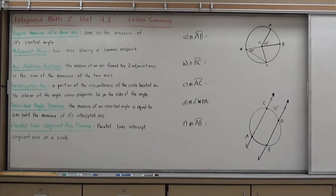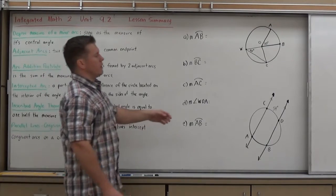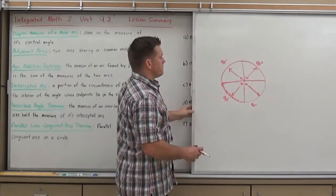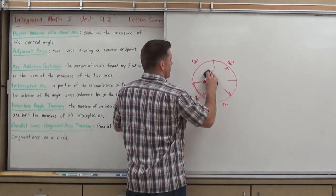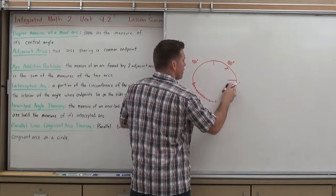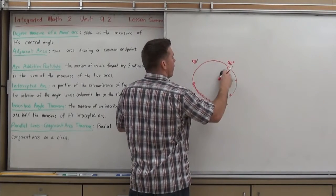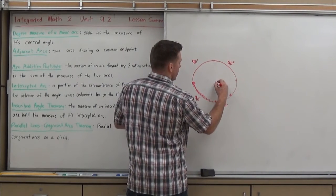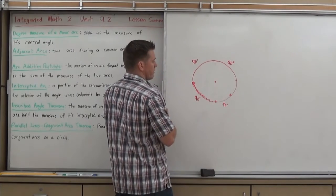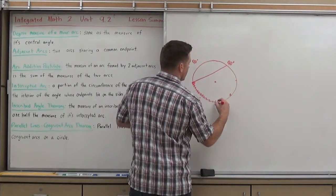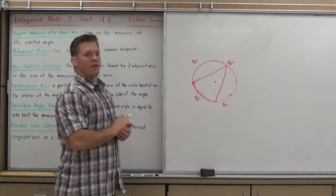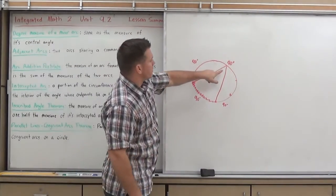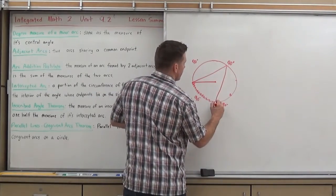The inscribed angle theorem says that the measure of an inscribed angle is equal to one half the measure of its intercepted arc. So let me explain what an inscribed angle is. So we have this same diagram. We know that these are 90, etc. Well an inscribed angle now goes from two points on the circle. And rather than going to say the vertex, it goes all the way through to the other side of the circle. So this would be my inscribed angle.